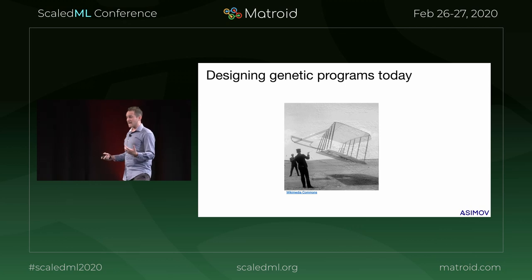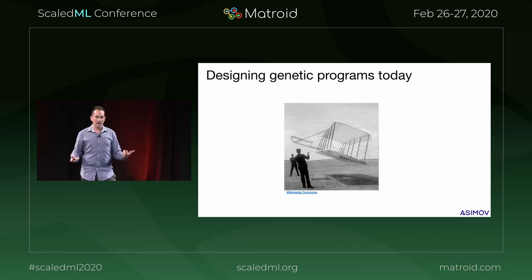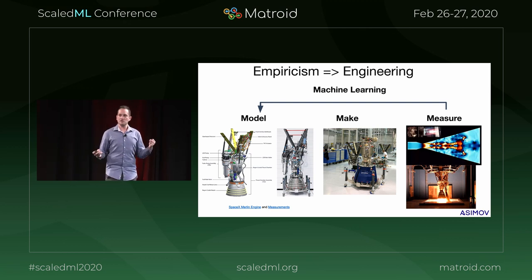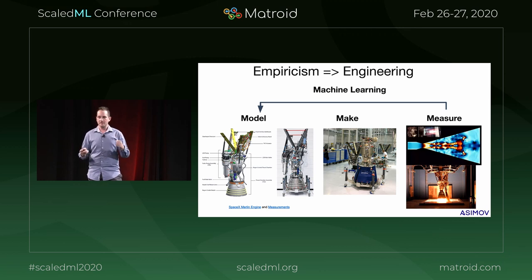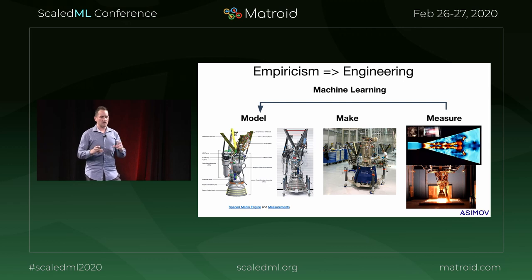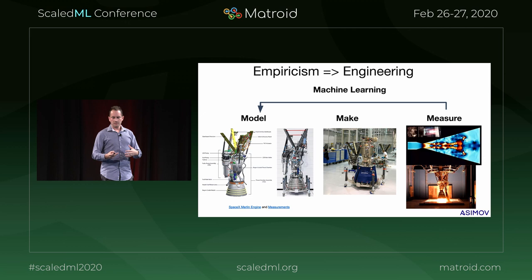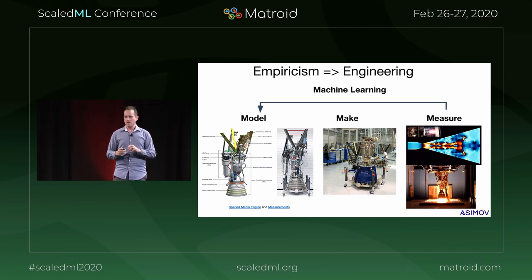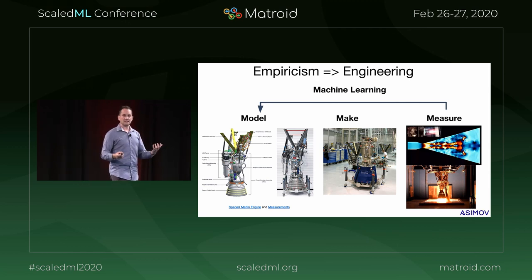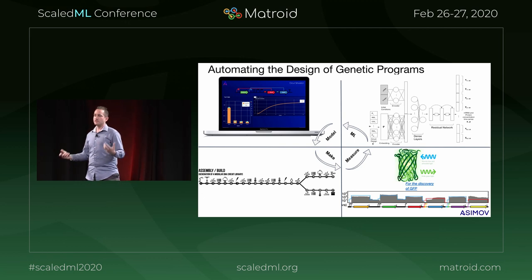The analogy I always give to designing genetic programs today is: if you wanted to build an airplane, it'd be crazy to just staple together parts and hope it would fly — that worked for the Wright brothers, but not for SpaceX. Instead, you'd go through a rigorous engineering process: a modeling phase where an engineer builds a specification with feedback about predicted weight, cost, lift, and drag before deploying capital to physically make it. Then a measurement phase — CFD simulations and physical tests — and calculating a loss between computational and real-world behavior to feed back into the modeling software.